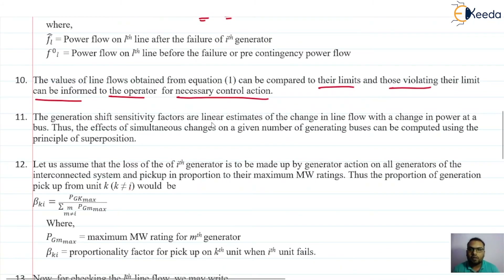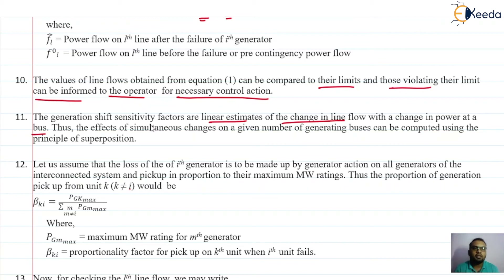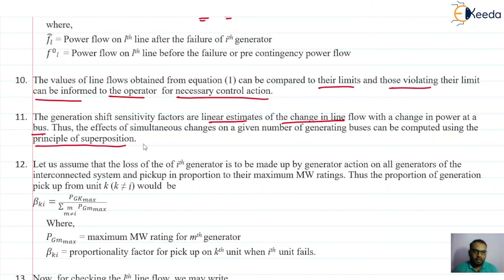These Generation Shift sensitivity factors are linear estimates of change in line flow with change in power at the bus. Here we have considered the outage at only one bus — the ith bus. If there is an outage at multiple buses, we can take the help of the principle of superposition: consider outages one by one, calculate their effects, and at the end club all those effects. The result can then be compared with the limits of those lines. If any violation is found, inform the operator; if no violation, no need to inform the operator.